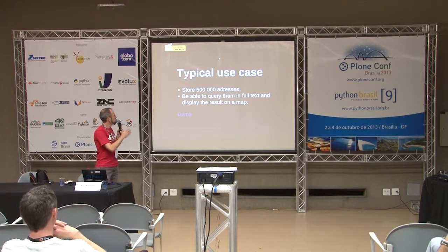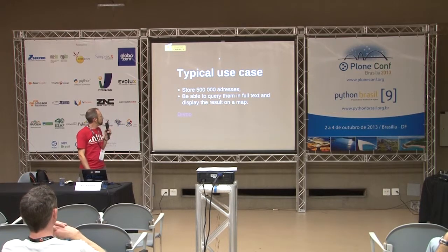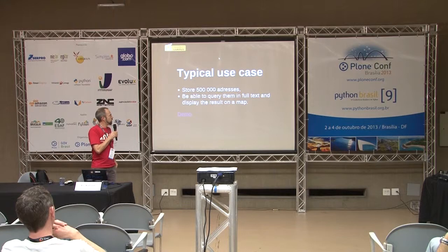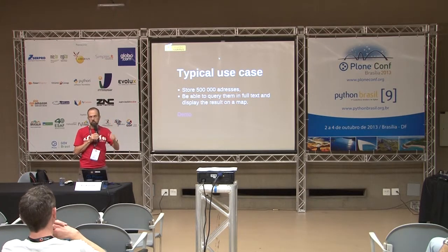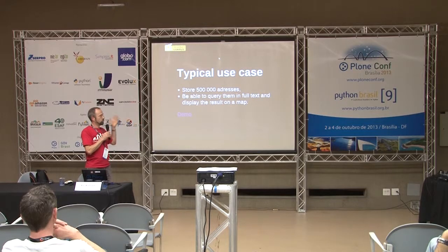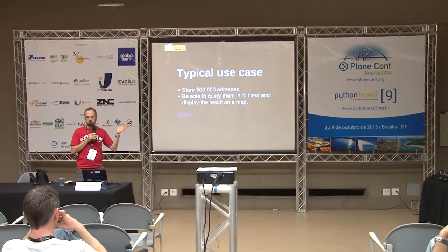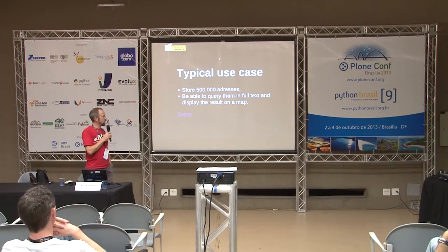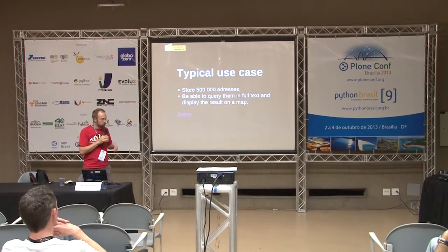Typical use case: I needed to have 500,000 addresses for a sub-part of France, and to be able to query them in full text — just like when you type an address on Google Maps — and to display the result on a map. Let's see the demo.